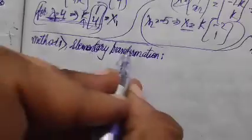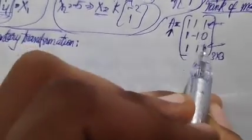For the elementary transformation method, you can observe that this row and this row are the same, so they are dependent. We can subtract one from the other and one row becomes entirely zero. After that, the determinant of the matrix is equal to zero.